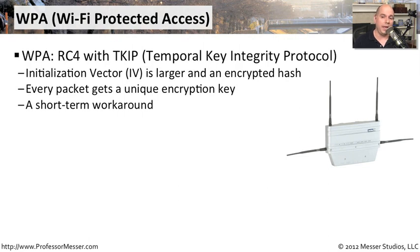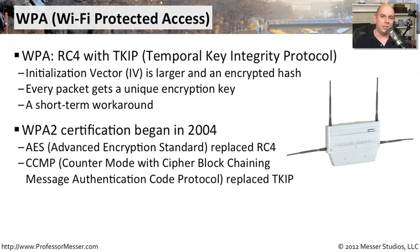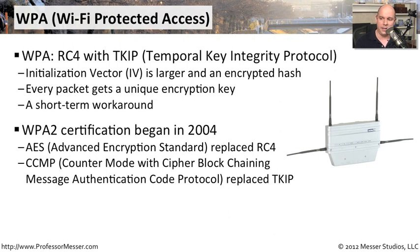And that's where we came up with WPA2 — the final standard for this brand new encryption type. It used a cipher called AES, the Advanced Encryption Standard, which replaced RC4. Unfortunately, AES required a lot more CPU cycles, so in many cases we had to upgrade from old hardware to a brand new access point. WPA2 also used Counter Mode with Cipher Block Chaining Message Authentication Code Protocol, which we call CCMP, replacing TKIP — a much more secure protocol for authenticating and verifying the data within packets.